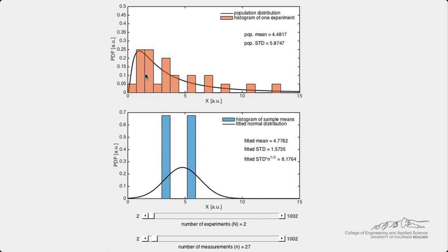Now let's run an experiment where we measure this variable 27 times. So in this experiment there are 27 measurements. If we plot a histogram of these measurements shown in red in the top plot, the shape is similar to the population distribution as we would expect.